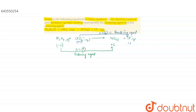So in this question, the oxidizing agent is ClO3⁻ and the reducing agent is N2H4, which is hydrazine.